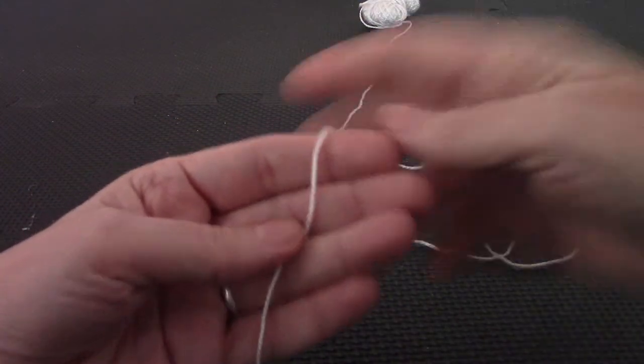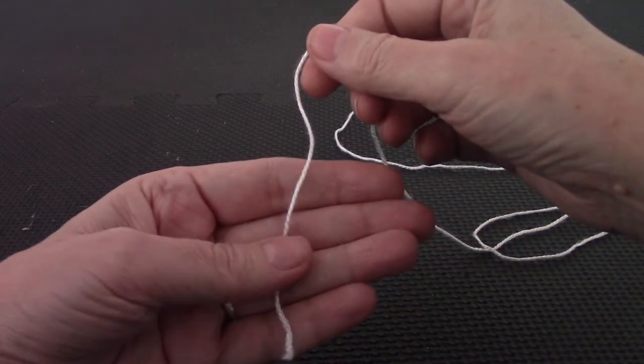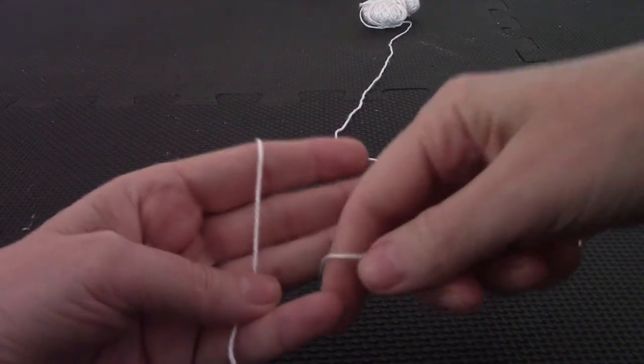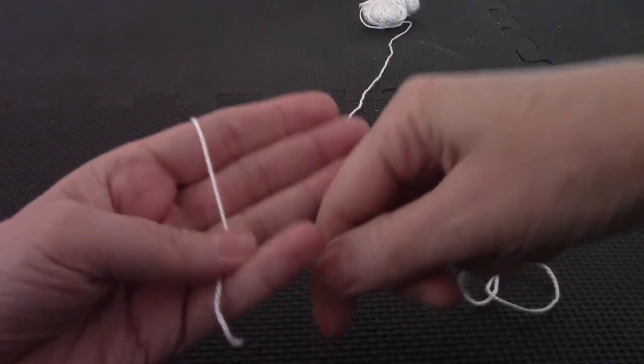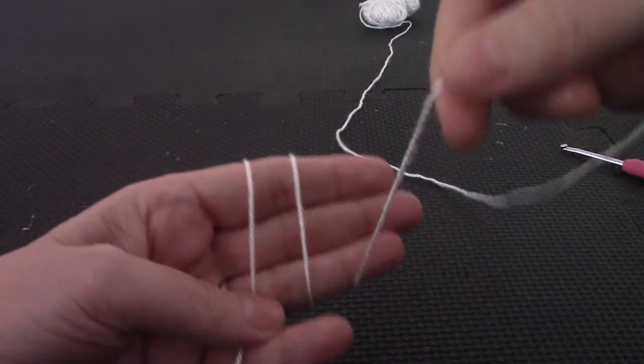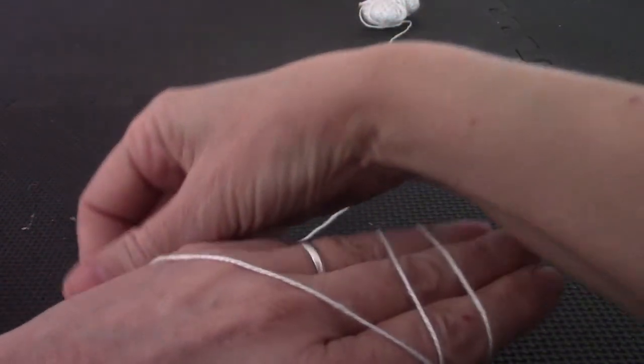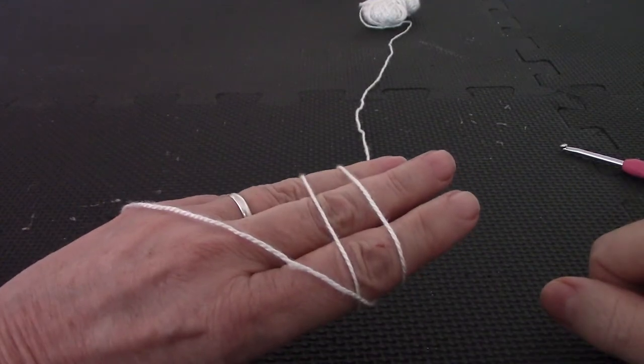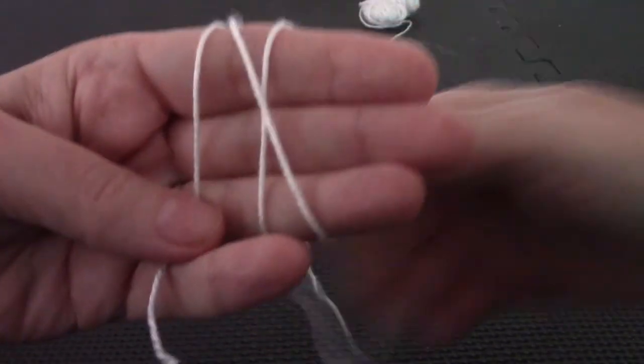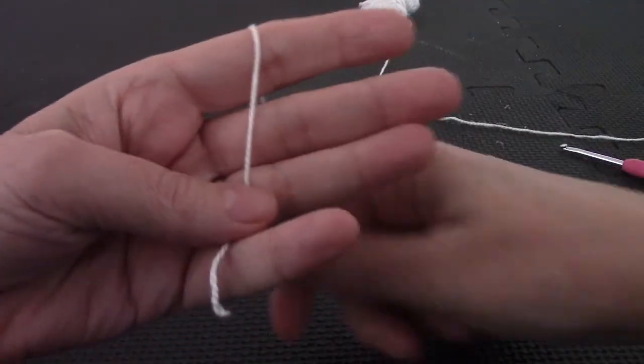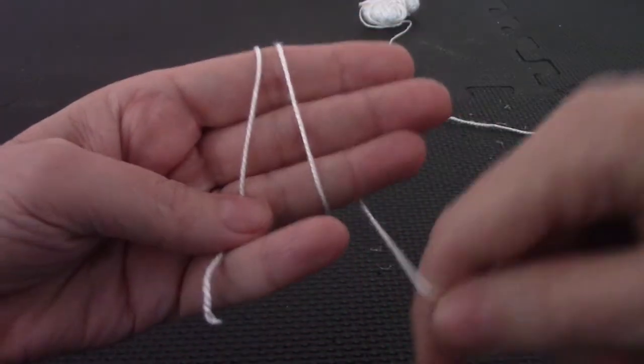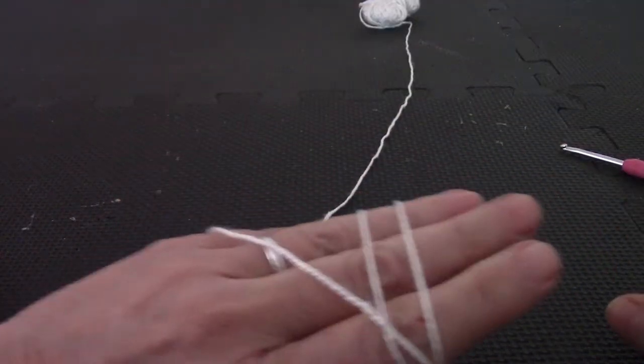Okay, so here's the double magic loop. Put your tail in your hand. Now I use three fingers, you can use four, doesn't matter. So we're going to go once, twice, and the third time you throw it towards your wrist. So it looks like that. Let's go again. Tail in the palm of your hand, once, twice, third time towards your wrist.